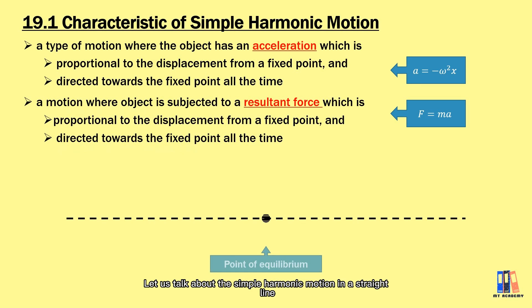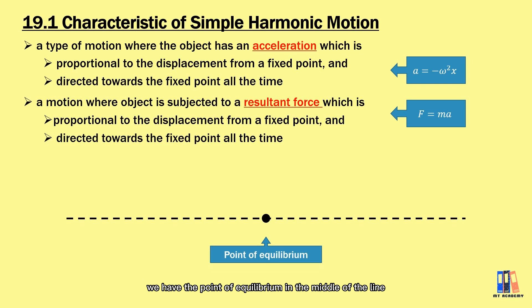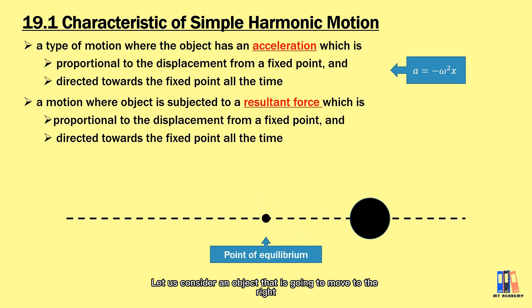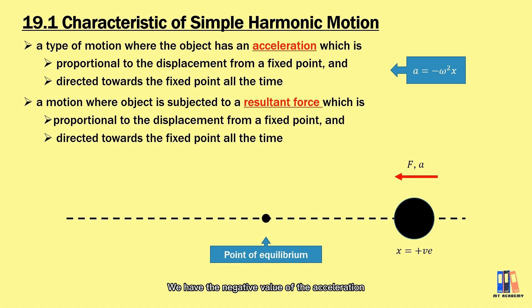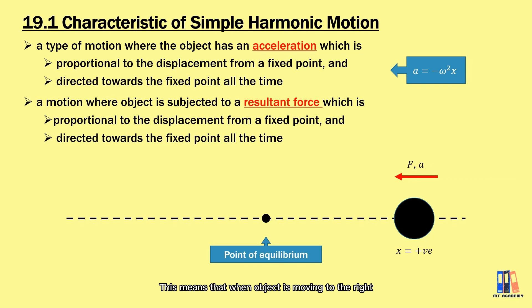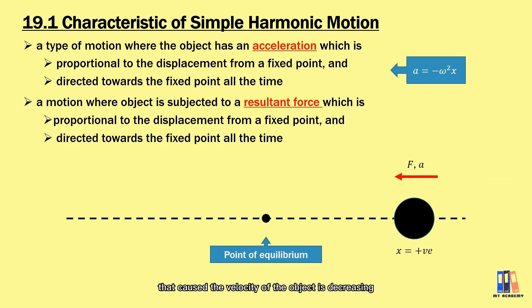Let's talk about simple harmonic motion in a straight line. We have the point of equilibrium in the middle of the line. Consider an object that is going to move to the right. Along the motion, the displacement of the object has a positive value, so we have a negative value of acceleration or resultant force. This means that when the object is moving to the right, it is subjected to a force in the opposite direction, causing the velocity to decrease — in other words, the object is decelerating while moving to the right toward the maximum distance, also known as the amplitude.